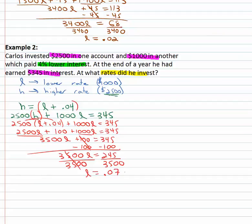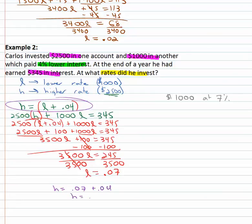The result is point oh seven. The lower rate is .07, so the one thousand dollars is at seven percent. Then the higher rate is l plus .04, which is .07 plus .04, giving us the higher rate of point eleven — eleven percent. So we have the twenty-five hundred dollars at the higher rate of eleven percent for our final solution.